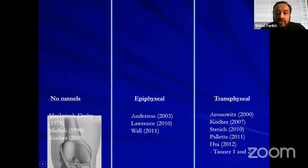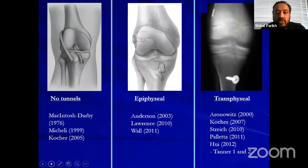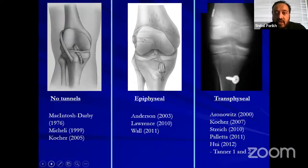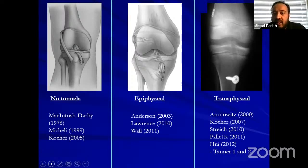As far as techniques are concerned, we can broadly divide them into three groups. One with no tunnels — the original McIntosh procedure, later written up for ACL reconstruction in immature patients by McKinley and Coker. The epiphyseal technique, where you drill tunnels but stay within the epiphysis around the knee, first described by Anderson with many variations since. And the transphysial reconstruction, where you go through the physis and do an adult-type procedure with certain principles in mind.